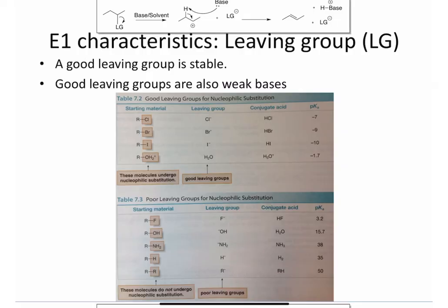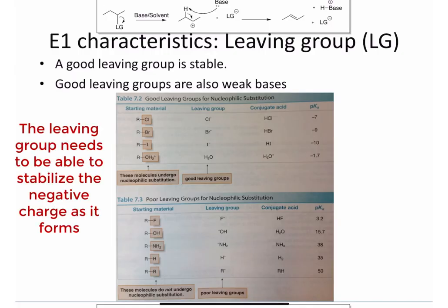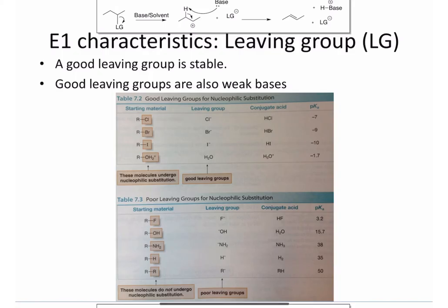The next characteristic we're going to look at is the leaving group. This is a group that breaks away from the alpha carbon. A good leaving group is stable on its own. Good leaving groups are also weak bases, because weak bases are stable.